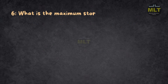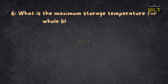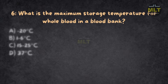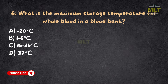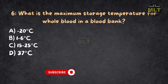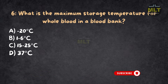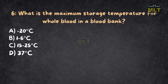Question 6: What is the maximum storage temperature for whole blood in a blood bank? Option A: Minus 20°C. Option B: 1 to 6°C. Option C: 15 to 25°C. Option D: 37°C. Correct answer: B, 1 to 6°C.